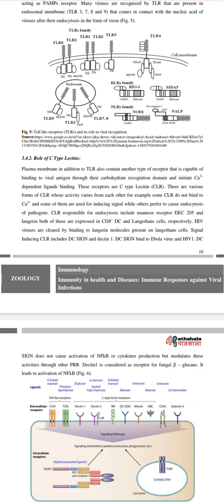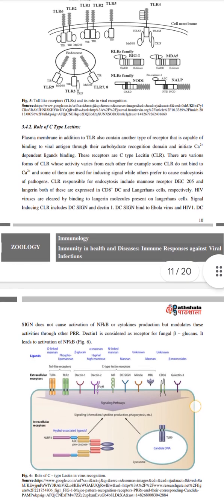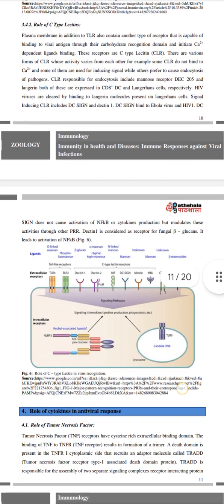HIV viruses are clearly binding to langerin, a langerin molecule present on Langerhans cells. Signaling-inducing CLRs include DC-SIGN and lectin-Y. DC-SIGN binds to Ebola virus and HIV. DC-SIGN does not cause activation of NF-κB or cytokine production directly, but modulates these activities through other PRRs.